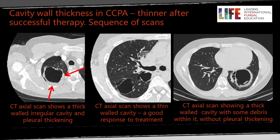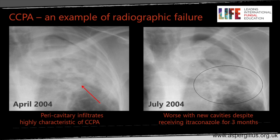When the atypical features include the absence of marked local pleural thickening, you might be more reliant on serology for the diagnosis. If the patient deteriorates, a chest X-ray series can show failure of treatment. In April 2004 there's a classical aspergilloma with a cavity, air crescent, and a little shadowing, but by July of the same year there's development of new cavities in the area of presumed infection — despite three months of itraconazole.